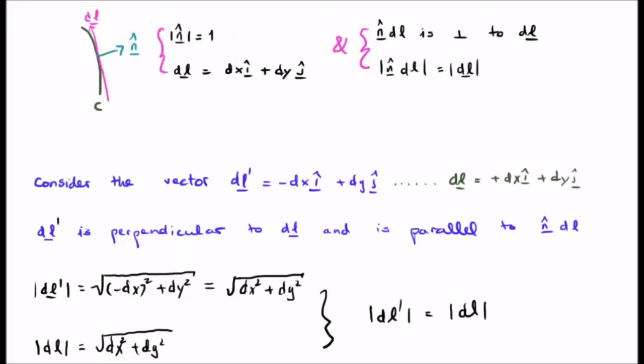Consider a new vector. I'm going to call it DL prime just to distinguish it from DL. But let's say instead of having it plus DX i hat plus DY j hat, it's minus DX i hat plus DY j hat.